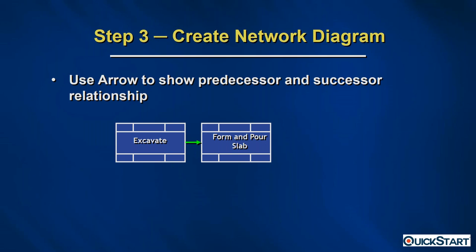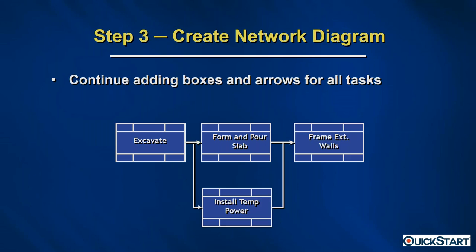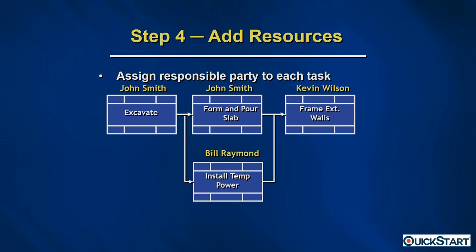We use an arrow to show the predecessor and successor relationship between those tasks. This picture tells us that the Excavate task must complete before the Form and Pour Slab task can start. We continue adding boxes and arrows for all of the tasks in the project. This simple four-task network diagram is what we'll use to explain the critical path method of scheduling.